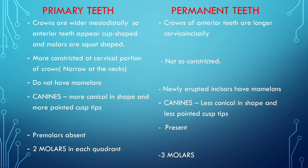Primary teeth crowns are wider mesiodistally, so anterior teeth appear cup-shaped and molars are square-shaped. Permanent teeth crowns of anterior teeth are longer cervico-incisally. Primary teeth are more constricted at the cervical portion of the crown — they are narrow at the necks. Permanent teeth are not so constricted.